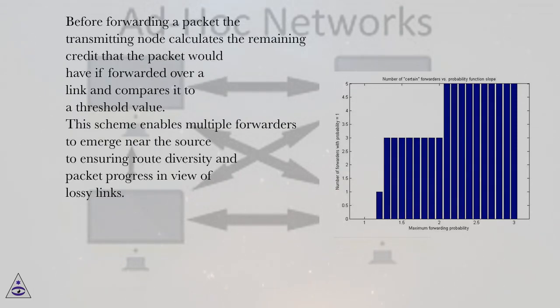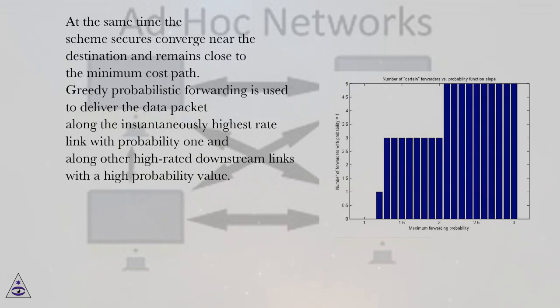Before forwarding a packet the transmitting node calculates the remaining credit that the packet would have if forwarded over a link and compares it to a threshold value. This scheme enables multiple forwarders to emerge near the source to ensuring route diversity and packet progress in view of lossy links. At the same time the scheme secures convergence near the destination and remains close to the minimum cost path.